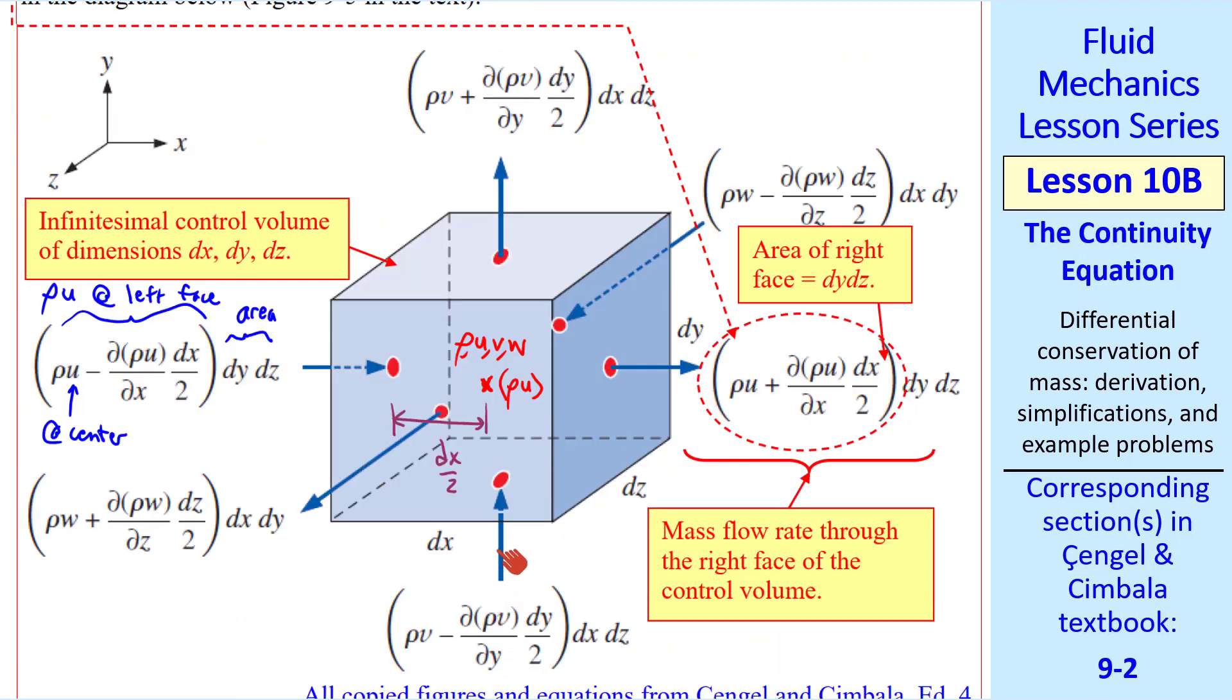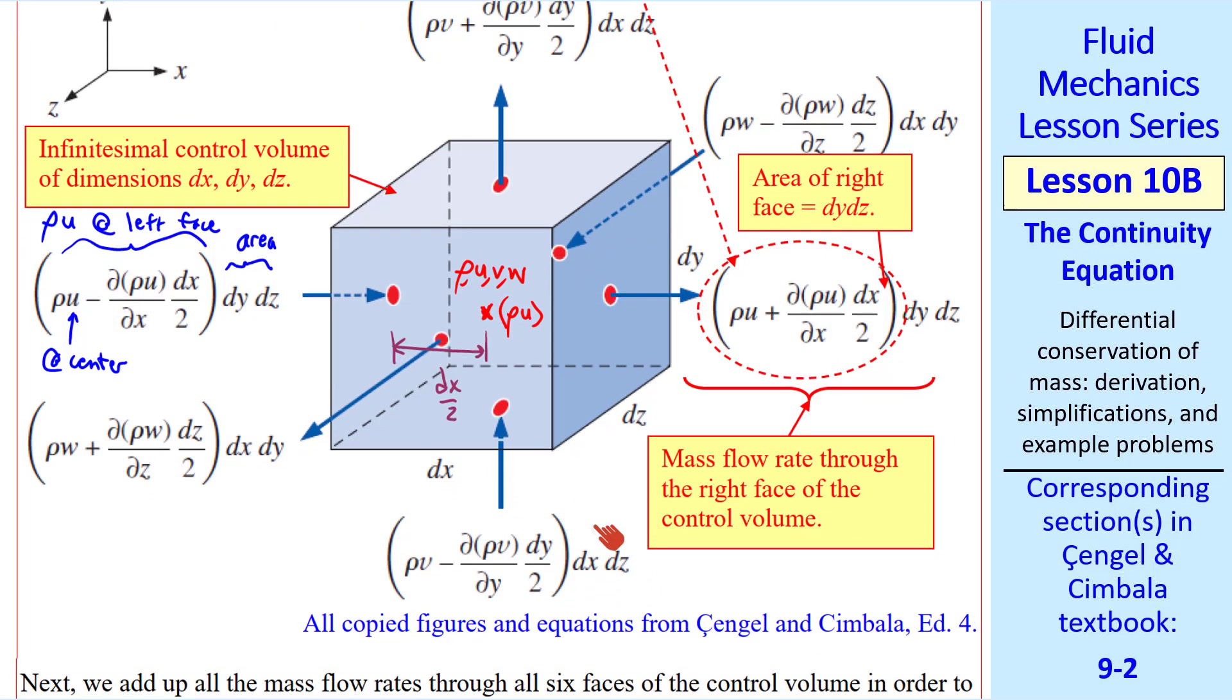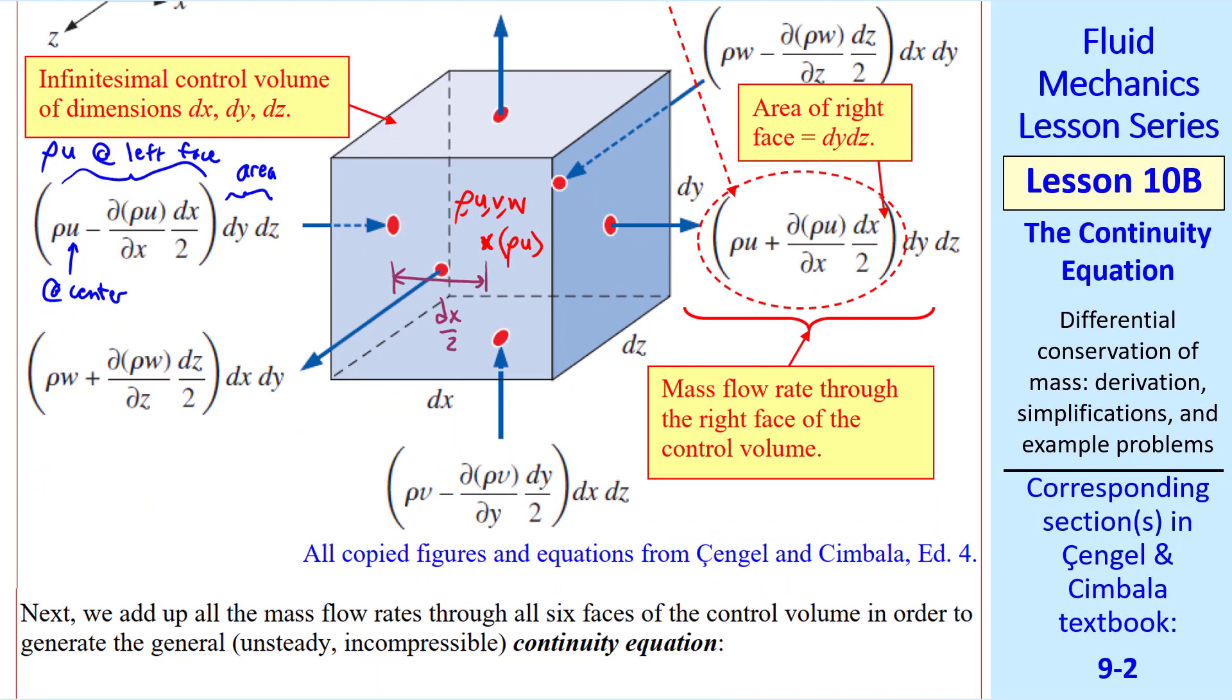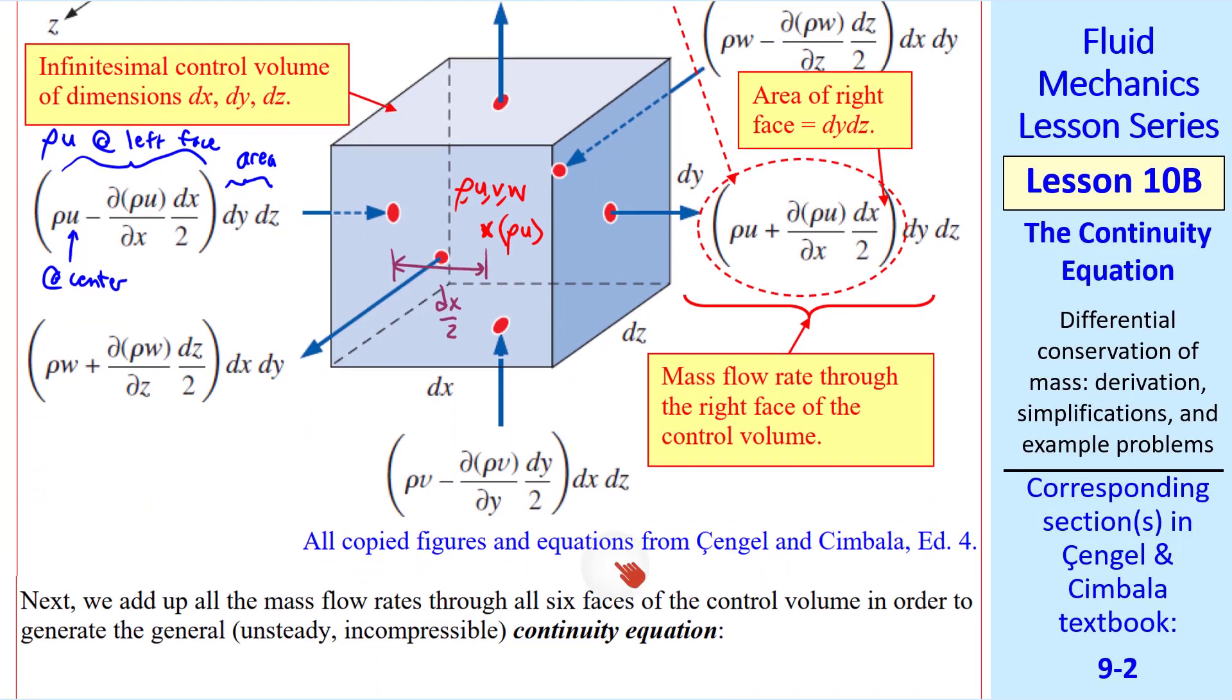We do the same thing in the y direction. There's flow coming in from the bottom and coming out the top. And our distance from the center to the face is either dy over 2 or negative dy over 2. And the area is dx, dz. We do a similar thing in the z direction. These six terms represent the mass flow rate through all six faces of this control volume.